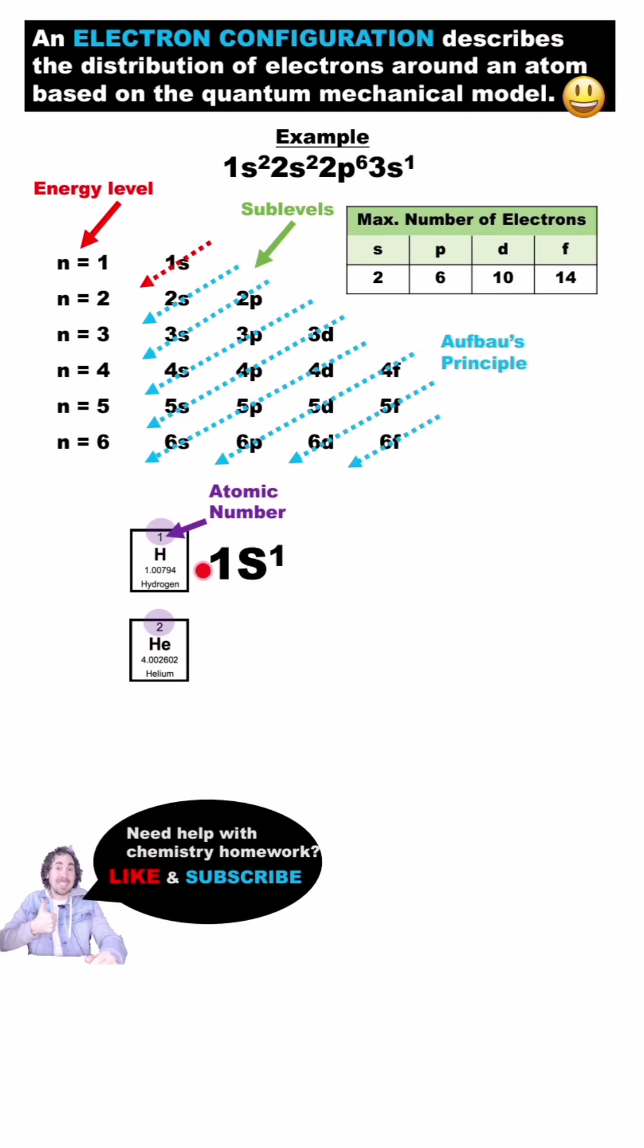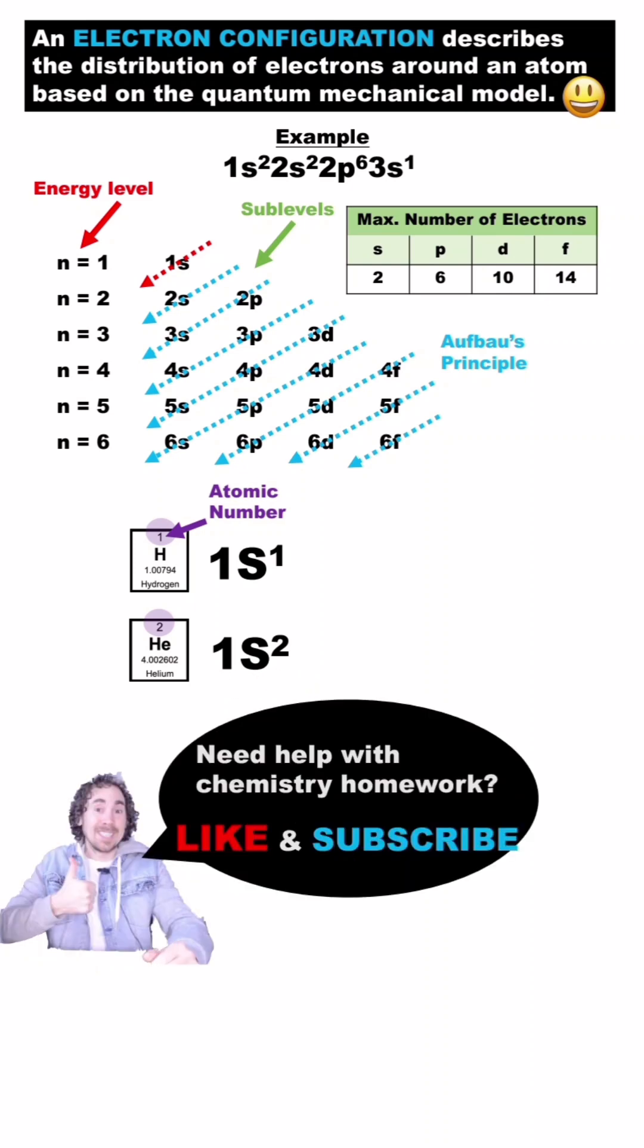Hydrogen only has one electron, so its electron configuration is 1s1. Helium has two electrons, and since an s sublevel can hold a maximum of two electrons, helium's electron configuration is 1s2.